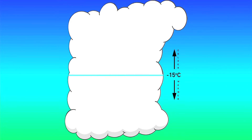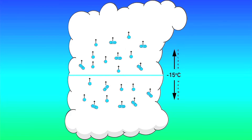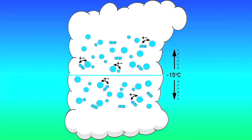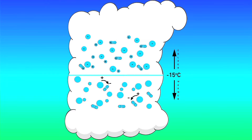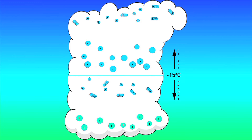So, where does all this charge buildup come from? There's some debate about this, but the basic idea is that collisions between snow pellets falling towards the ground and ice crystals being lofted upwards result in the exchange of charge. In the colder, upper half of the cloud, the snow pellets pick up negative charge during these collisions, while the ice crystals become positively charged. In the warmer, lower half of the cloud, the opposite occurs. As the snow pellets continue to fall and melt into raindrops, and the ice crystals continue to rise, this results in the cloud having three distinct charge regions.